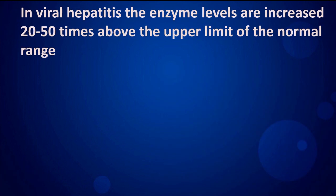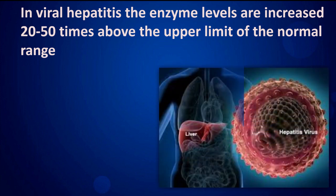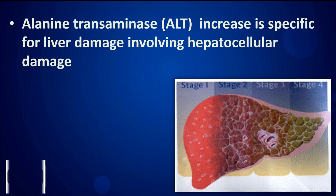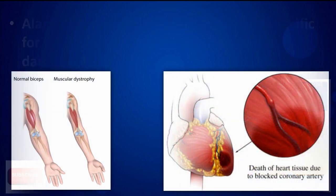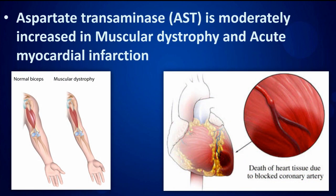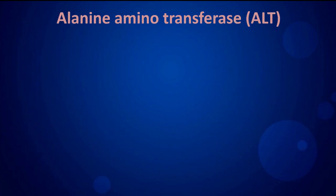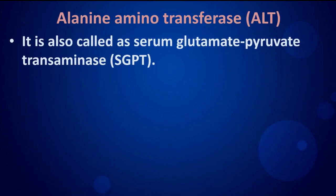In viral hepatitis, the enzyme levels are increased 20 to 50 times above the upper limit of the normal range. Alanine transaminase increase is specific for liver damage involving hepatocellular damage. Aspartate transaminase is moderately increased in muscular dystrophy and acute myocardial infarction.